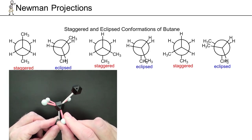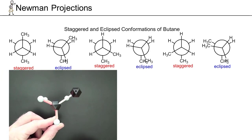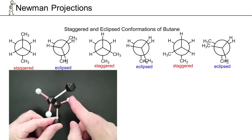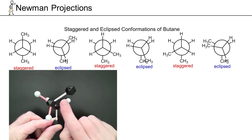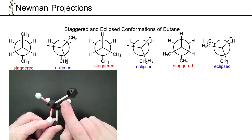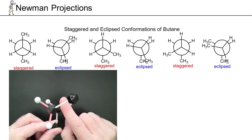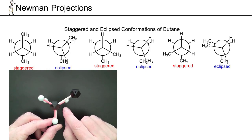Rotating 60 degrees gives us our first eclipsed conformation. The front carbon's three bonds are exactly in front of the back carbon's three bonds, hence eclipsing. This is higher energy because the atoms are as close as they could possibly be together — we call that steric hindrance. The electrons in the bonds are also as close as they'd ever be, causing repulsion called torsional strain. These are the two reasons why eclipsing interactions are the highest energy.